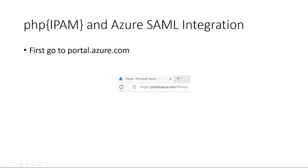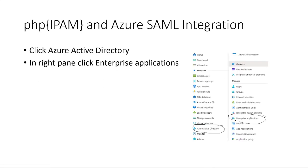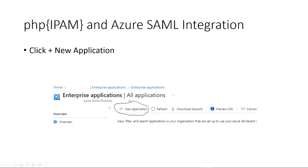Next, we will go to the Azure portal — that's portal.azure.com. In here, we'll go to Active Directory and then Enterprise Applications.